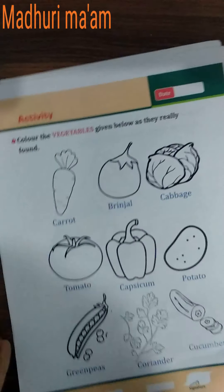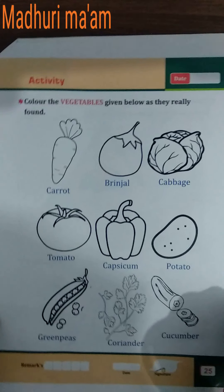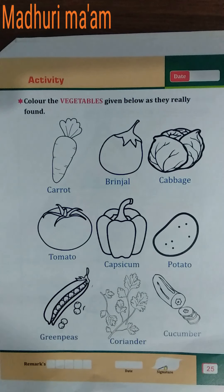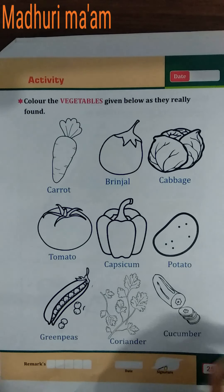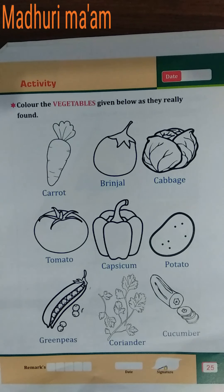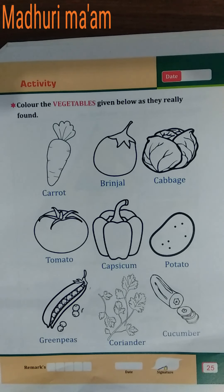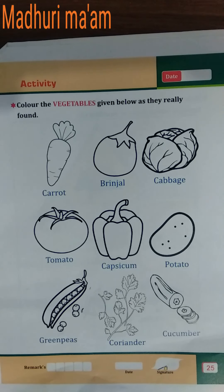Now today we do coloring in these vegetables. What to do? Color the vegetables given below as they are really found. Here the vegetables are found in real — how do you see them? Whenever you eat this vegetable, which color do you see? You have to do that color.